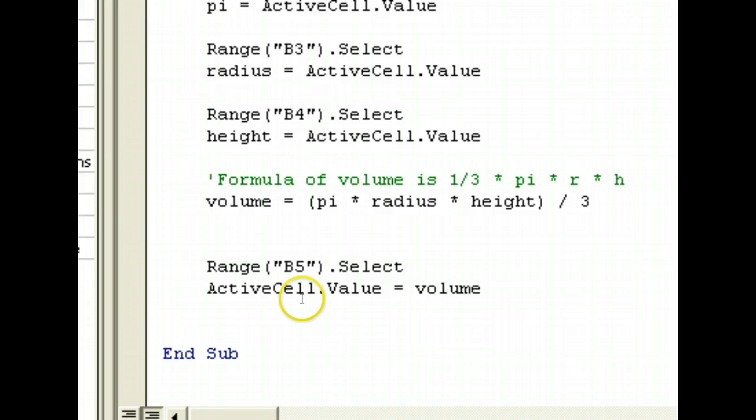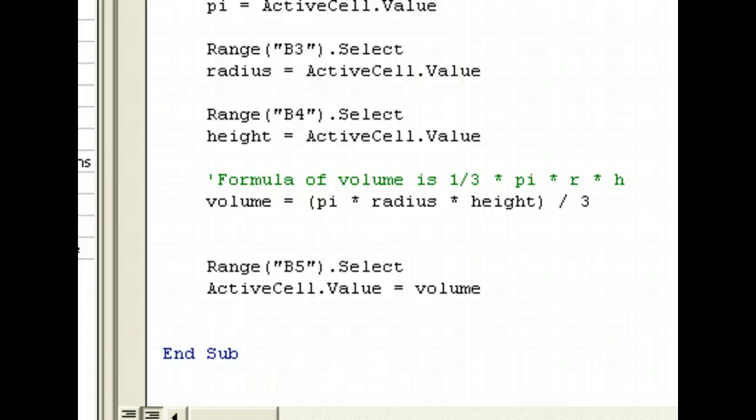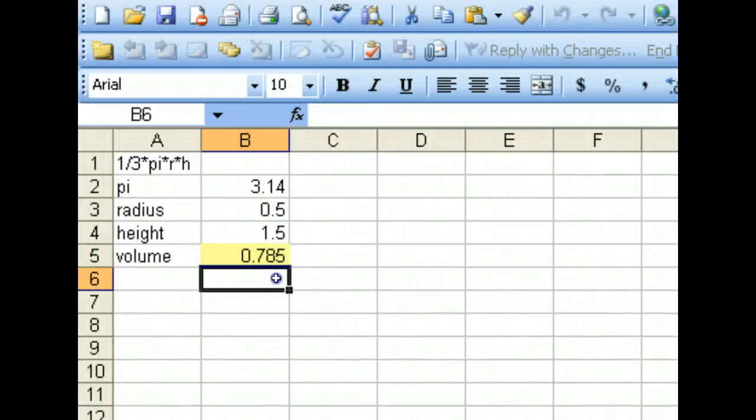Alright. And there we have it. So, what we are doing here is that now we are selecting the range B5. And the value that we have created in this volume variable, which is this, will be assigned to our active cell, which is B5. So, if we run this, let's take away the break point. If we run this and we go back to our Excel spreadsheet, the volume is automatically created for us.